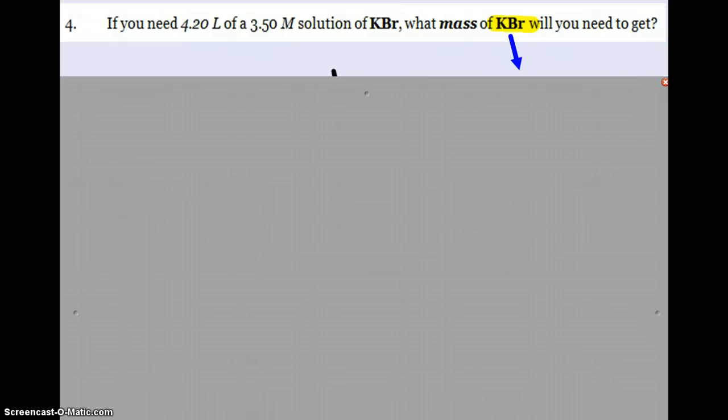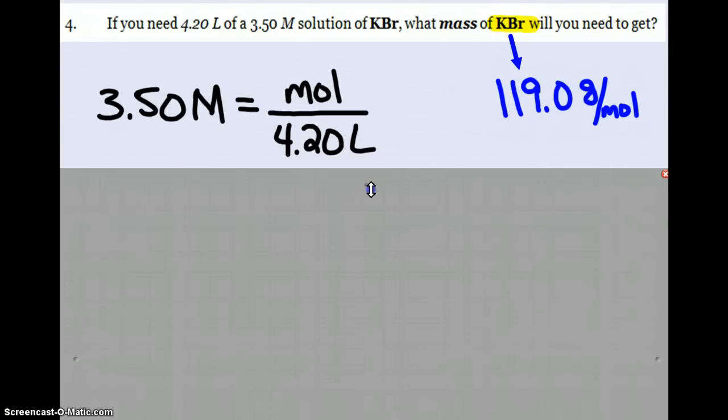Next question: if you need 4.20 liters of a 3.5 molar solution of potassium bromide, what mass of that potassium bromide are we going to need to get? We know that we have a 3.5 molar solution and 4.2 liters of it. We don't know how many moles of potassium bromide are in the solution, which is what we want because moles along with the molar mass from the periodic table will figure out the grams.